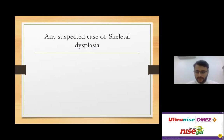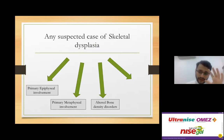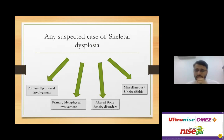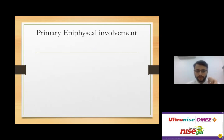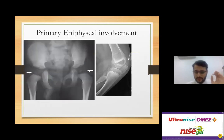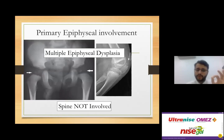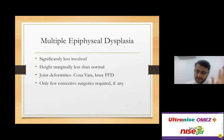The protocol for any suspected case of skeletal dysplasia is to classify it on X-ray. Look at whether there is primary epiphyseal involvement, primary metaphyseal involvement, altered bone density disorders, or miscellaneous unclassifiable disorders. Starting with primary epiphyseal involvement, going from less severe to more severe — X-rays may show only epiphyseal involvement, like the proximal femur, with the spine not involved.